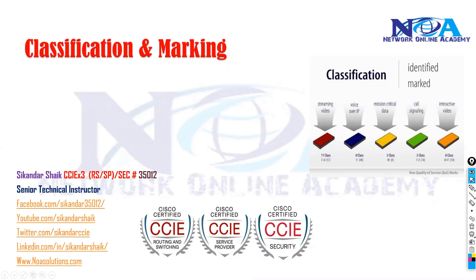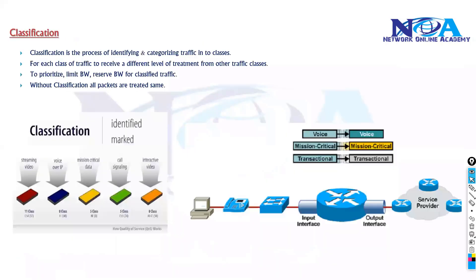In this section we will try to see the classification part. Before we do any kind of quality of service mechanism — whether you want to apply priority, guarantee specific bandwidth, or do any kind of queuing or shaping — the first step of quality of service is classification.